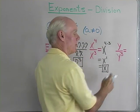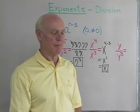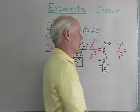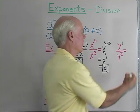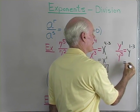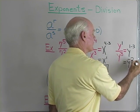y divided by y to the 3rd? Okay, well, what's the exponent in the numerator? I just have a y, so the exponent must be 1. So that's y to the 1 over y to the 3rd, which is y to the 1 minus 3, which is y to the negative 2.